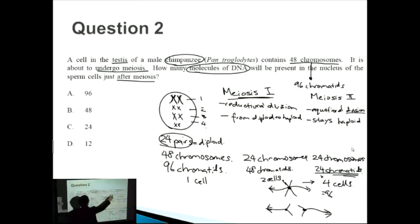So now let's look at the question. How many molecules of DNA will be present in a nucleus of the sperm cells just after meiosis? So sperm cells, it's plural, so it's talking about how many molecules of DNA will be in the 4 sperm cells available. So we said 24 times 4 equals 96. So for each singular sperm cell, how many chromosomes are there? How many chromatids are there? They're the same. It's 24 over here. Notice how we have 24 over here and 24 over here.